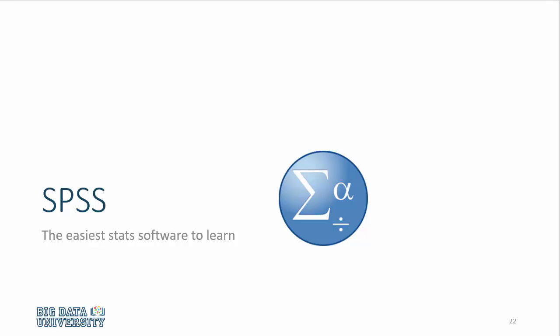Since we have adopted a hands-on approach to training, you will have to use statistical software with real-life data sets to learn the concepts we will illustrate. This requires us to pick a software for the courses, and I have picked SPSS. There are several reasons for my choice, but the most compelling reason is that SPSS is one of the easiest — if not the easiest — statistical software to learn.